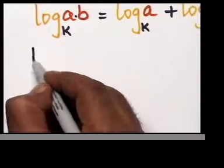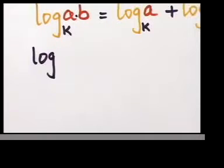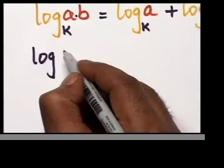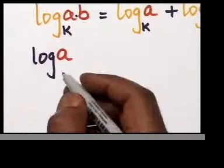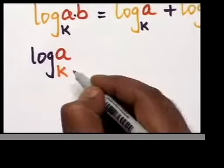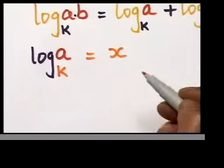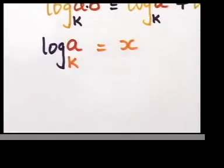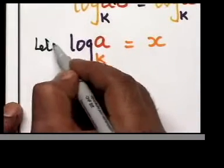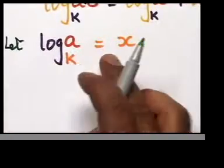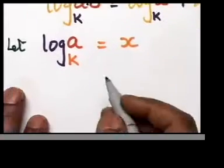We'll do one question very slowly. Log a to the base k — I'm taking this as x. So let us take log a to the base k is equal to x. That's what I chose as x.